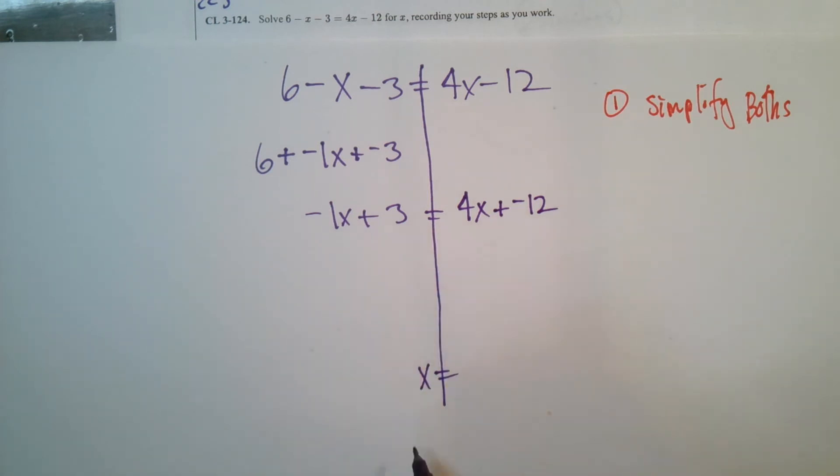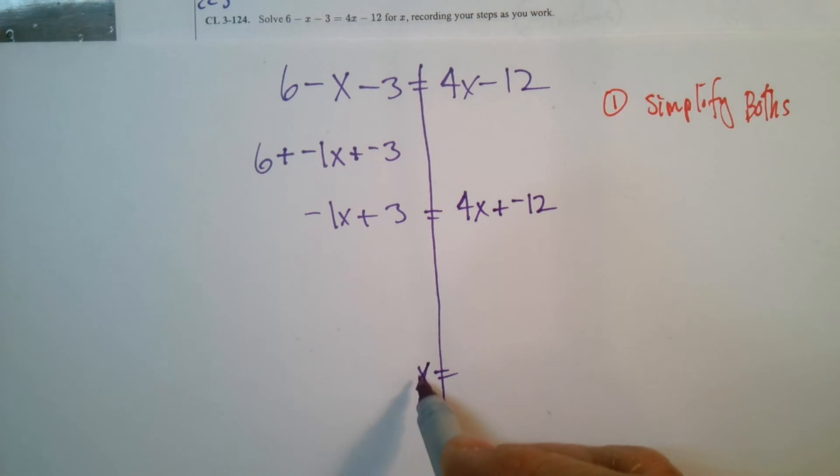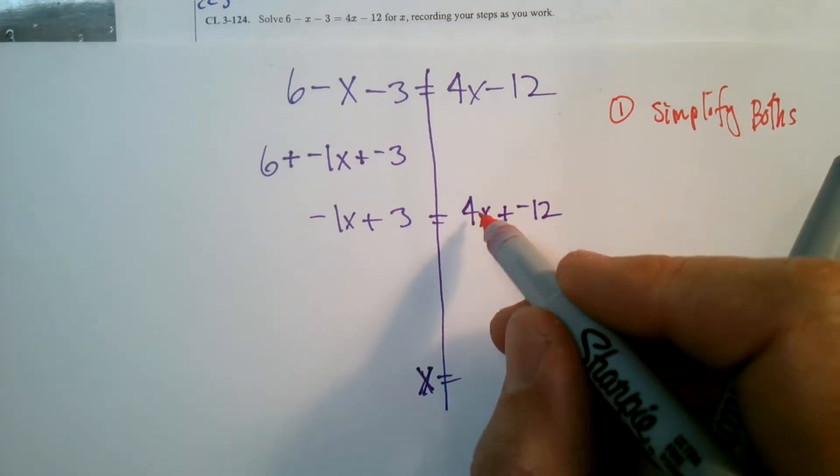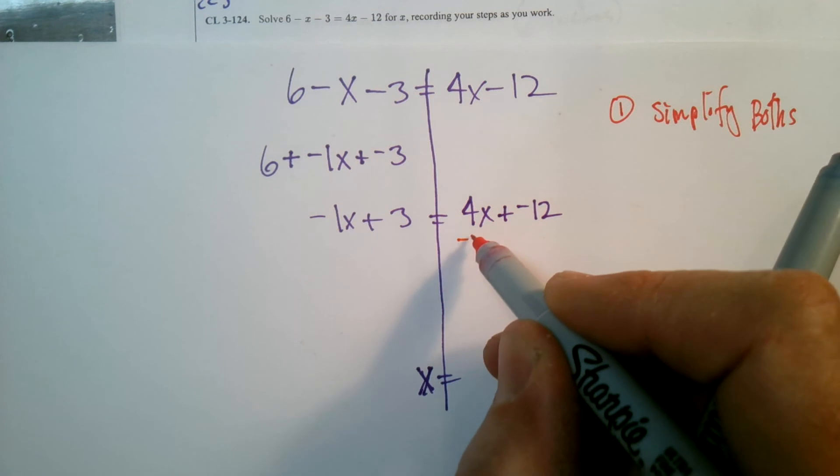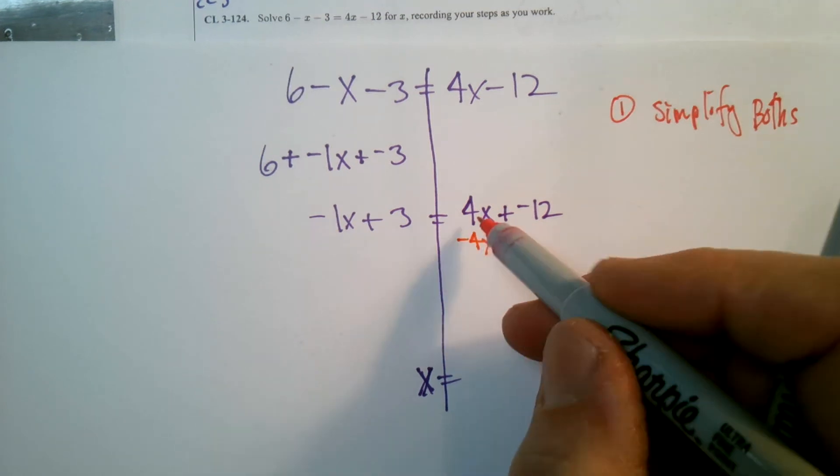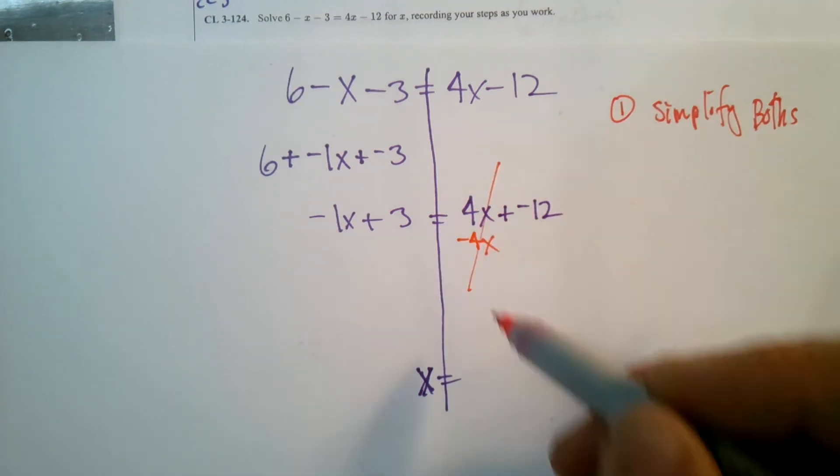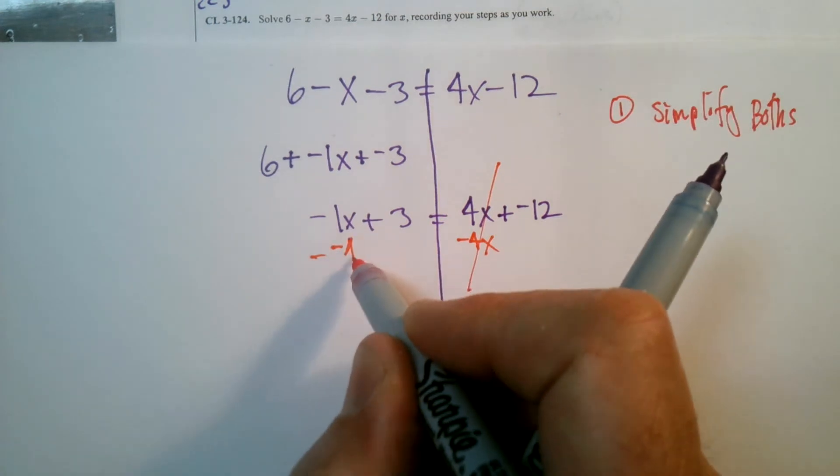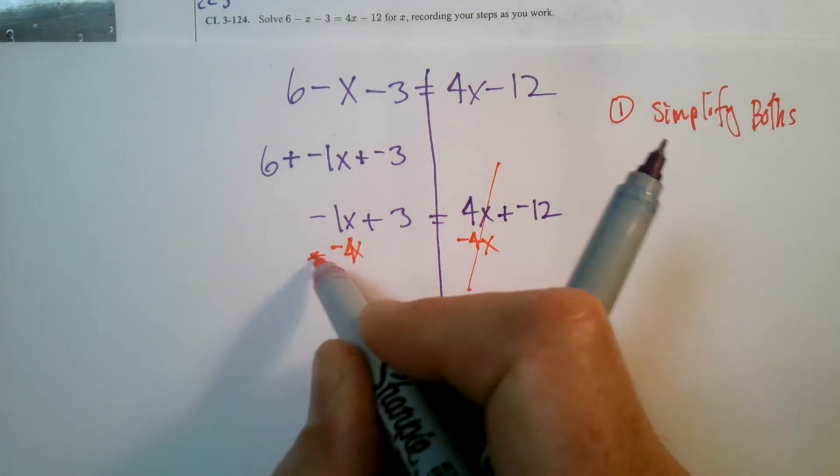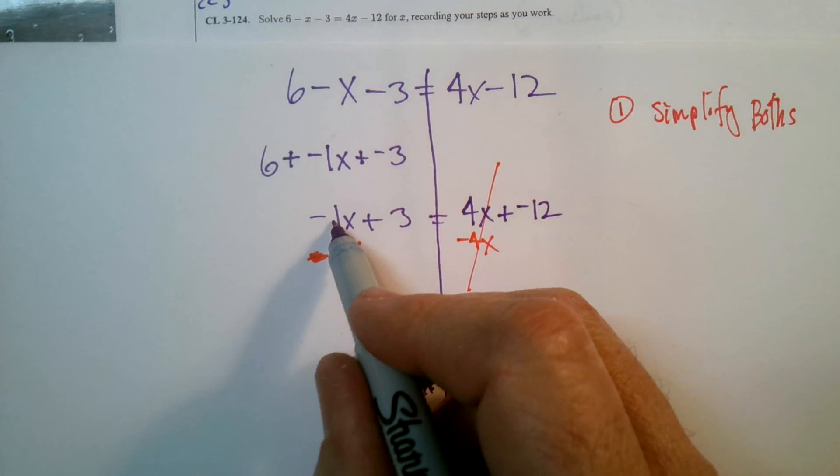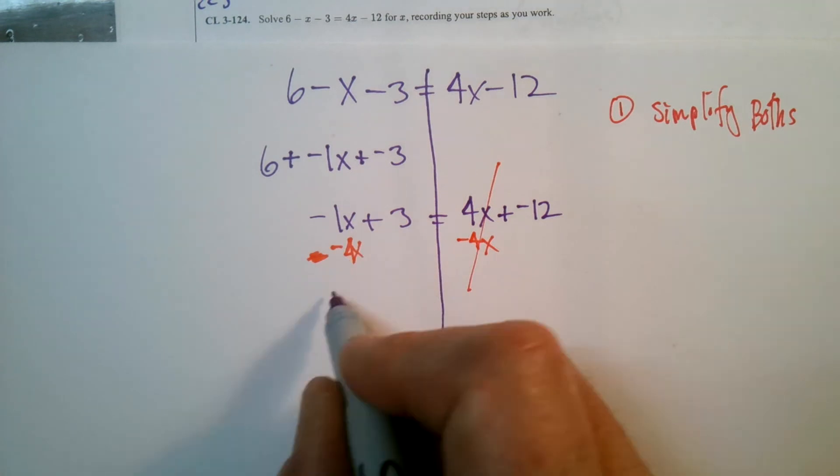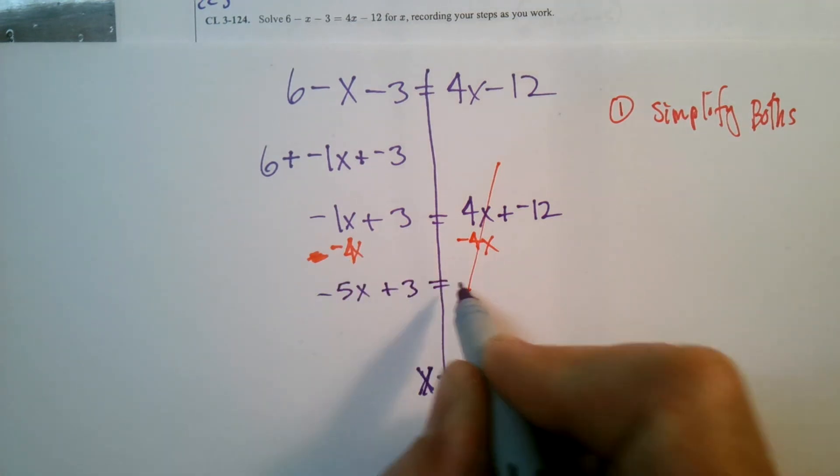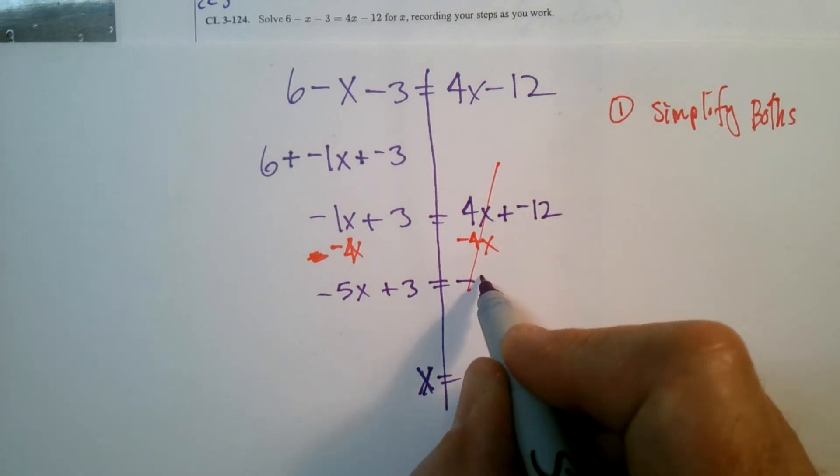So I want my X's all on one side and it looks like I've kind of determined to put X over here. So that means I got to get rid of it from over here. So an inverse operation, the inverse of 4X is negative 4X. A 4X and negative 4X, that causes that to cancel out. So I do the same thing over here, negative 4X. I have a negative 1X and a negative 4X, give me negative 5X. So I have negative 5X plus 3 is equal to what? All that's left over here is a negative 12.